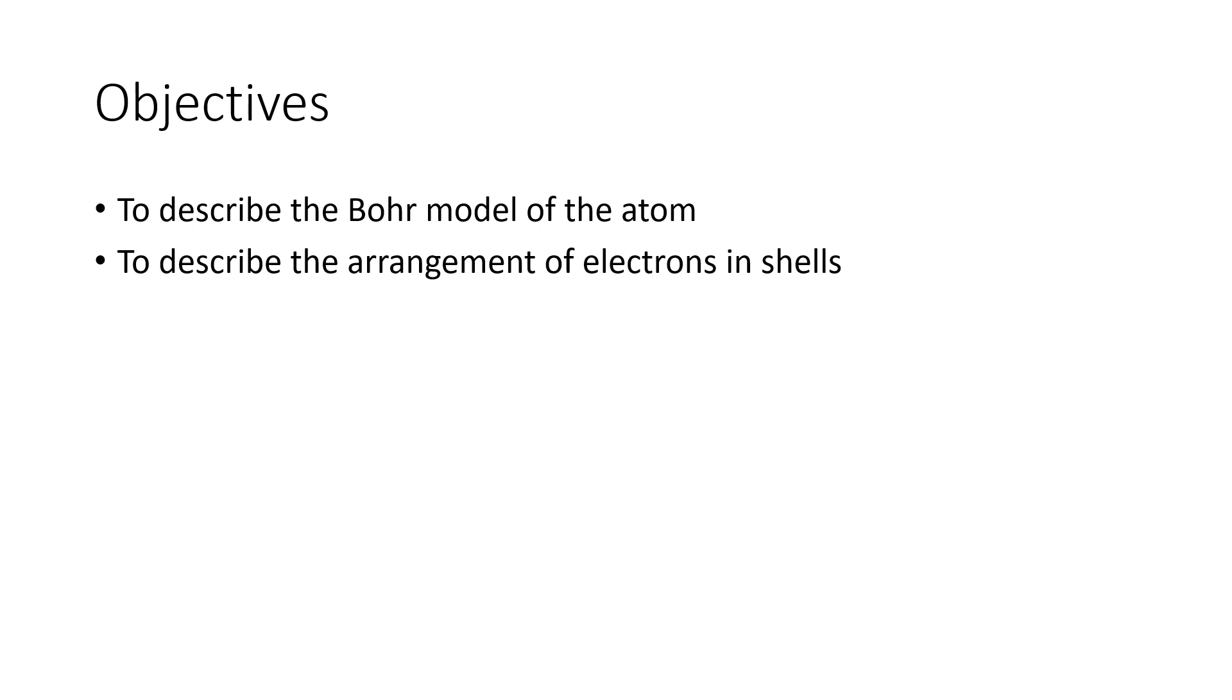So our first objective is to describe the Bohr model. It's this idea that electrons orbit in circles around the nucleus. And then to describe the arrangement of electrons in shells, each circular orbit can be referred to as a shell and can hold a different number of electrons. And the connection there is 2n squared, where n is the shell number.